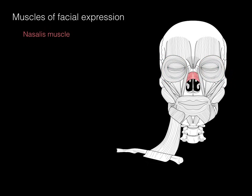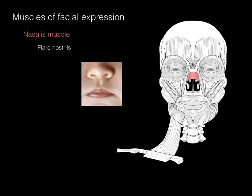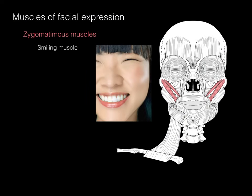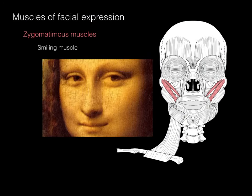Next we have the nasalis muscle, receiving its name for its attachments right along the nasal bone. Its function is to flare the nostrils. The zygomaticus muscles — zygomaticus major and minor — receive their name because they attach along the zygomatic bone and then insert on the corner of the mouth. This is the smiling muscle because it draws the corner of the mouth up in a smiling movement.